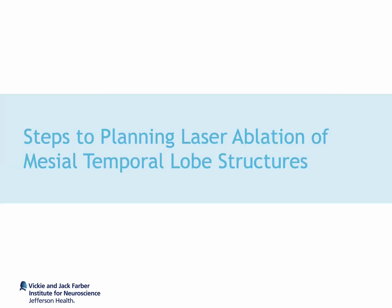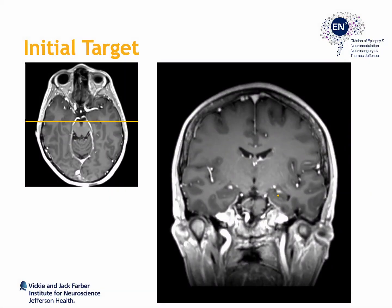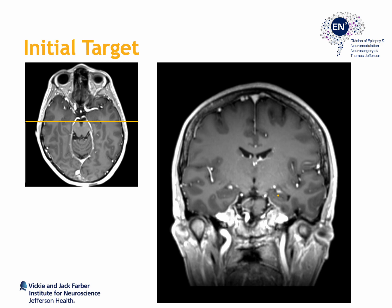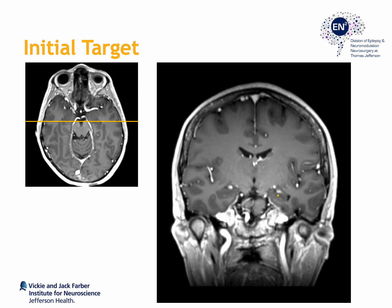Now let's take a look at the steps towards planning a typical trajectory through the long axis of the amygdala-hippocampal complex used for treatment of mesial temporal lobe epilepsy. Given the length of the overall trajectory, my general approach is to set a series of intermediate targets and intermediate entry points. My first target is at the level of the hippocampal head, where I pick a point within the hippocampus itself, located between one third and one half of the way from the medial edge of the hippocampus.